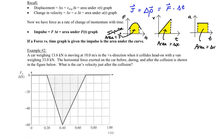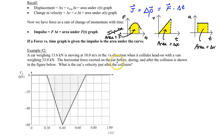So now let's look at example number two. We have a car weighing 13.6 kilonewtons — this is the weight of the car — traveling initially at a speed of 10 meters per second in the positive x direction, which we'll say is to the right. It then collides head-on with a van weighing 33 kilonewtons. The horizontal force exerted on the car is shown in this graph.